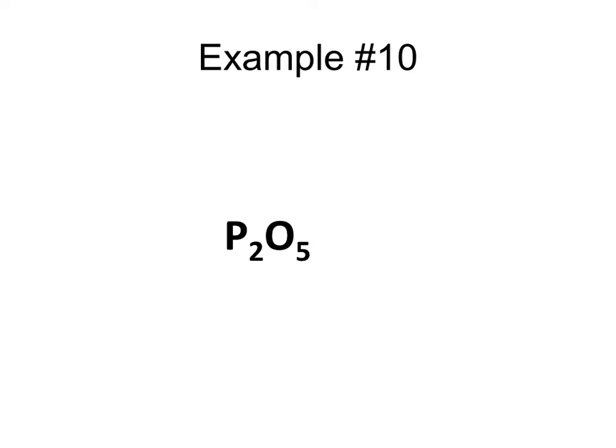So let's take a look at example 10. The first thing I want you to notice is that it is a binary compound consisting of two non-metals. The first thing that we're going to do is draw a line to cut those in half, and we're going to focus in on the subscripts.